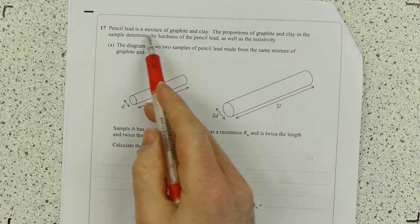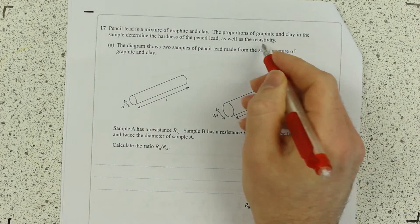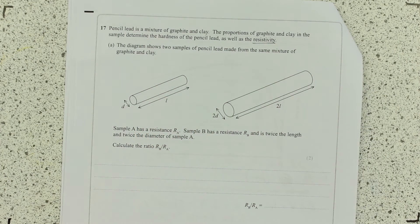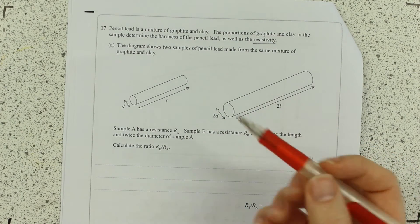So pencil lead is a mixture of graphite and clay. The proportion of graphite and clay in the sample will determine the hardness of the pencil lead as well as the resistivity. Obviously we don't use resistivity in normal use of pencils, but that gives you a clue as to what your question is going to be about.